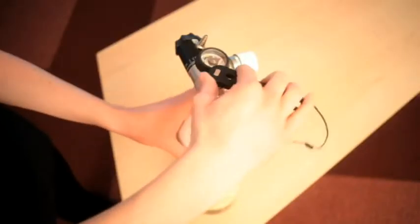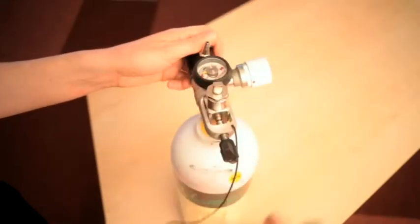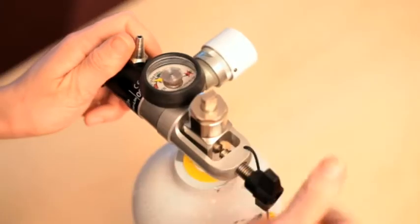To change the cylinder, turn the gas supply off and depressurize the system by rotating the flow selector to any flow setting. Regulate the T-bar until there is sufficient clearance between the yoke and the valve. Remove the regulator from the cylinder.